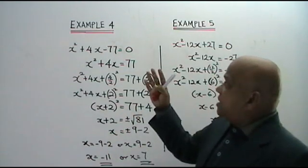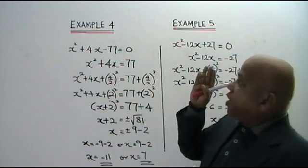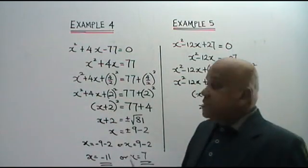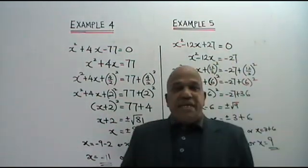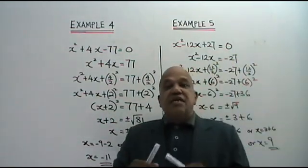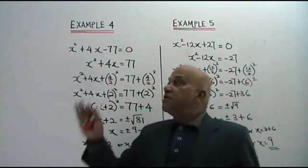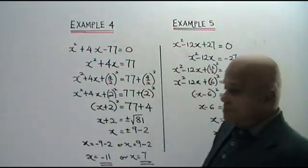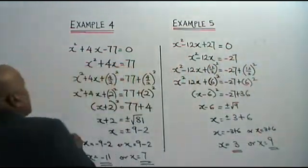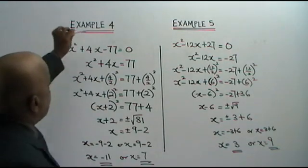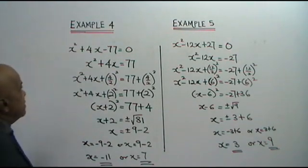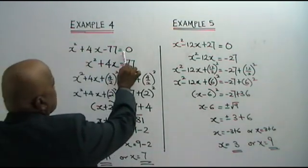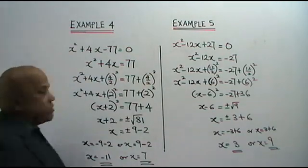Here, you are asked to solve these quadratic equations by completing the square. Let's see how this is done. Let's look at example 4. You are given x squared plus 4x minus 77 equals to 0.